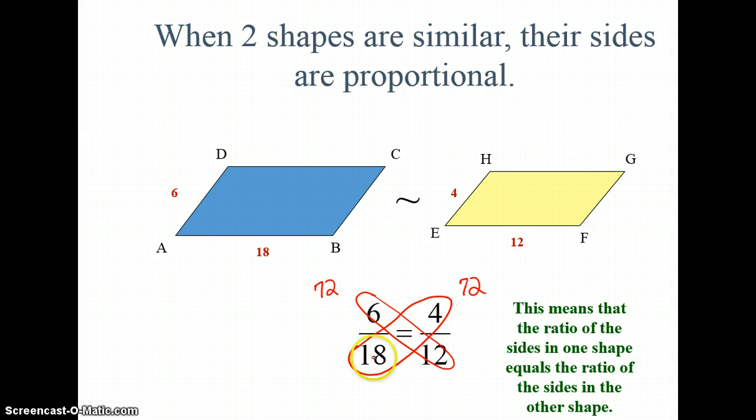So if I simplify here, I can divide 6 and 18 by 3. That gives me 2 sixths, which can be simplified again to 1 third. And 4 and 12 can both be divided by 4. When I simplify that, I get 1 third. So two ways I can tell if these two shapes are similar is if their proportions are equal. And the two ways I can tell that are cross products or by simplifying to see if I get the same ratios.